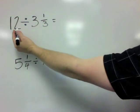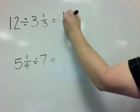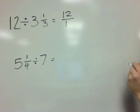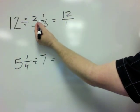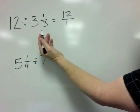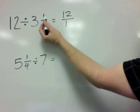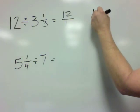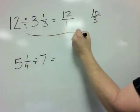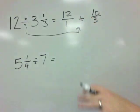To turn 12 into a fraction, you just put it right on top of 1, and then to turn 3 and a third into a fraction, this is going to be an improper fraction. 3 times 3 is 9, plus 1 is 10, so you've got 10 thirds. And that division symbol stays as division right now.